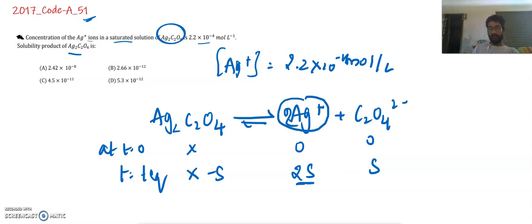2 Ag plus, so we are getting 2s and here s.